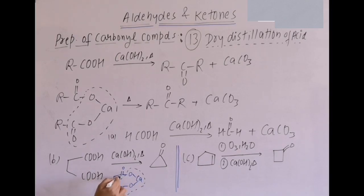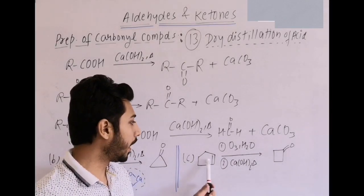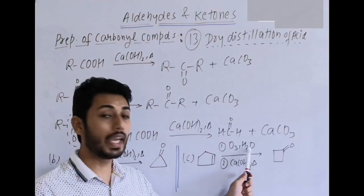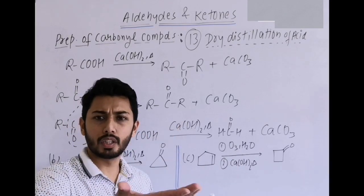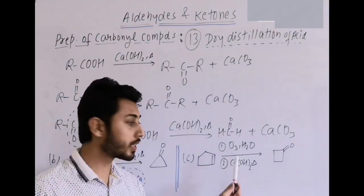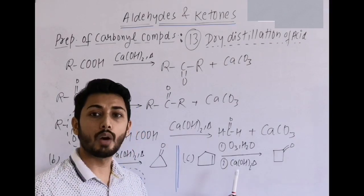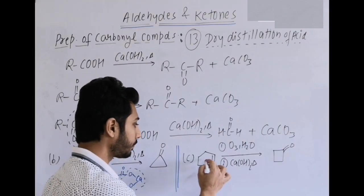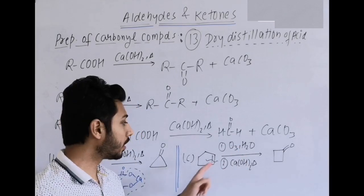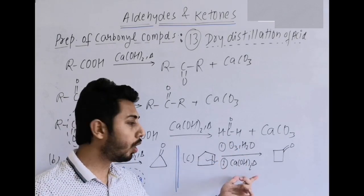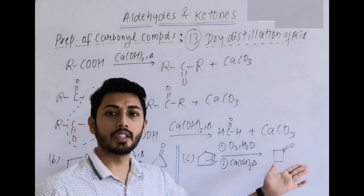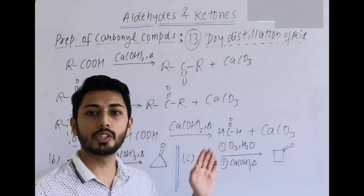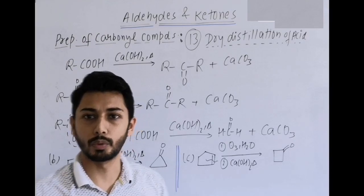Example: succinic acid with calcium hydroxide and heat — intermediate formed within the molecule — after removal of CaCO3, a three-membered ring carbonyl is formed (cyclopropanone). Final combined example: alkene first undergoes oxidative ozonolysis (O3/H2O) giving dicarboxylic acid, then dry distillation of the dicarboxylic acid gives a cyclic ketone — for example, cyclobutanone. Try these combined steps in your rough notebook.